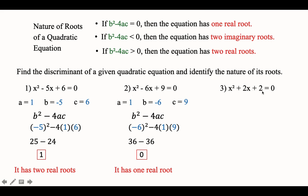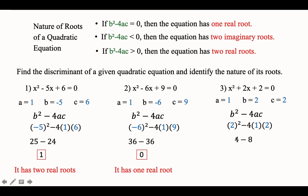Last example: x squared plus 2x plus 2 is equal to 0. Write down a, b, c: a is 1, b is 2, c is 2. Write the discriminant b squared minus 4ac and substitute: 2 squared minus 4 times 1 times 2. 2 squared is 4, and negative 4 times 1 times 2 is negative 8. So 4 minus 8 is negative 4. Negative 4 is less than 0, so it falls in the second indicator. This tells us that this quadratic equation, even without solving, has two imaginary roots.